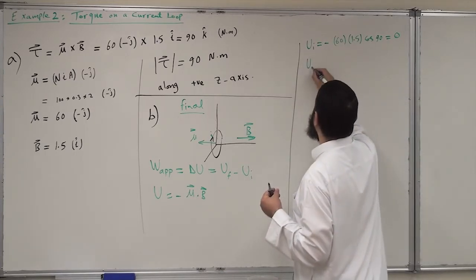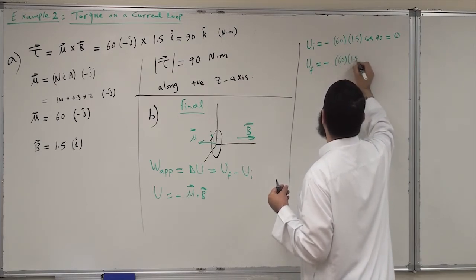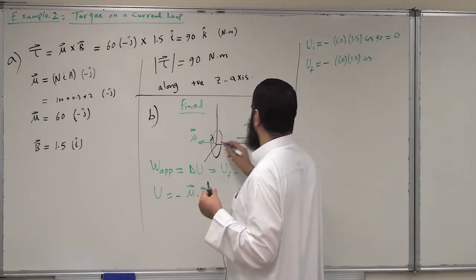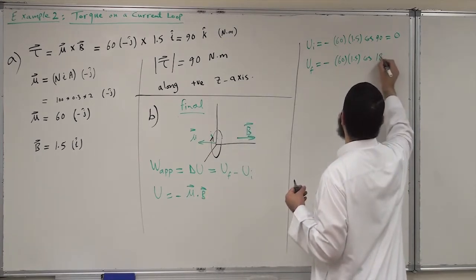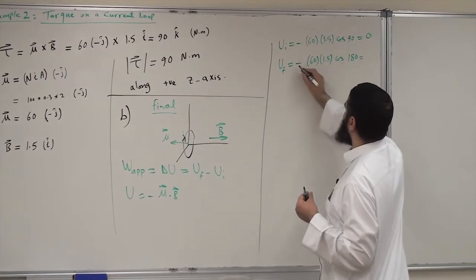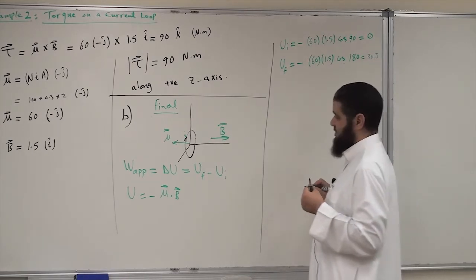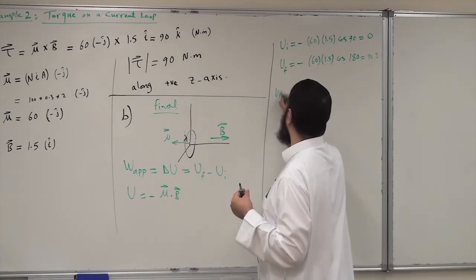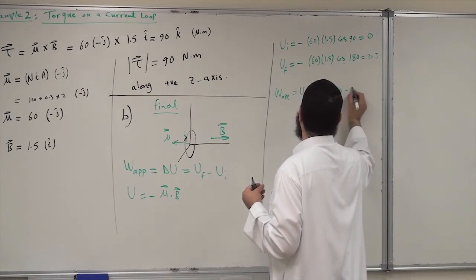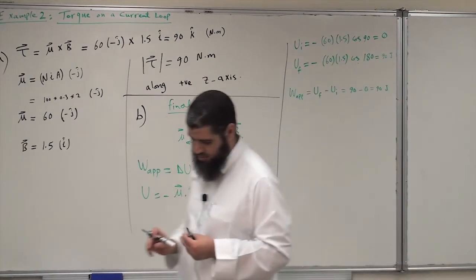For the final state, θ=180°, so cos(180°) = −1. U_final = −60 × 1.5 × (−1) = +90 Joules. Therefore, the work applied = U_final − U_initial = 90 − 0 = 90 Joules. This is the amount of work we need to do to perform the rotation.